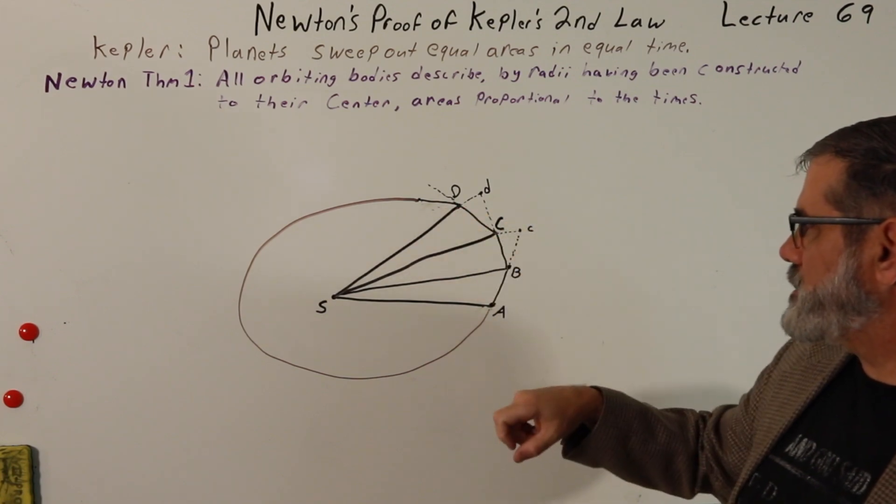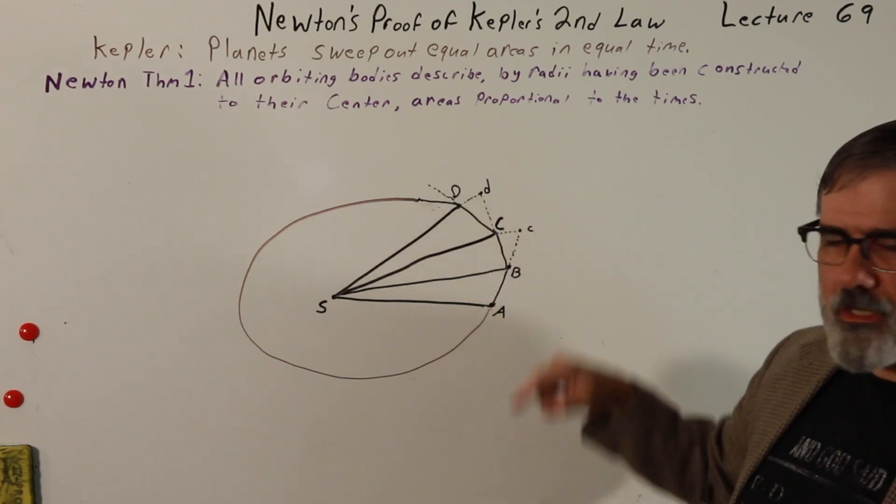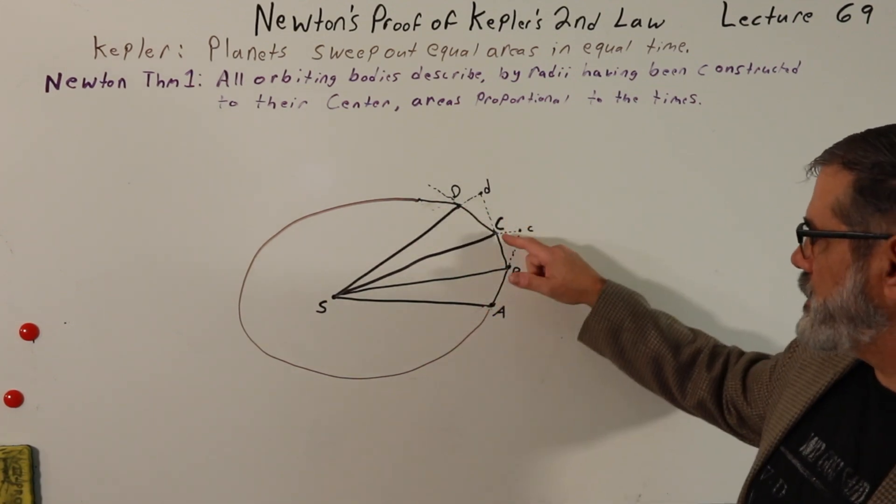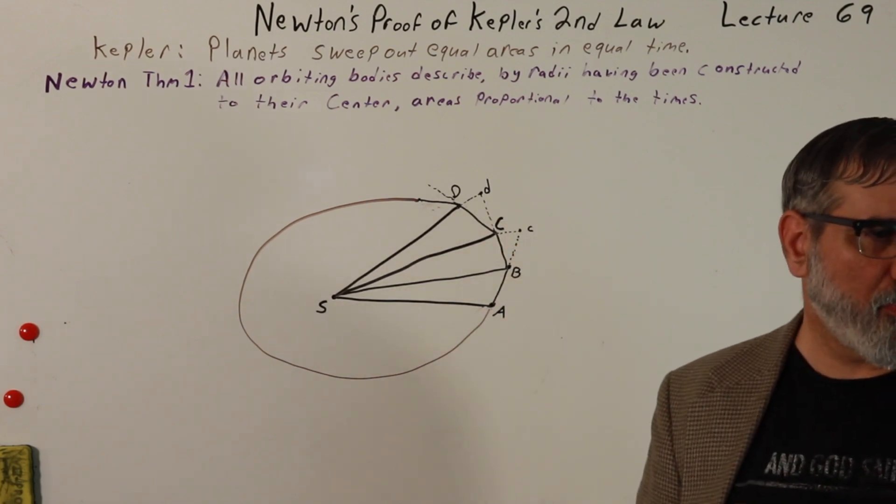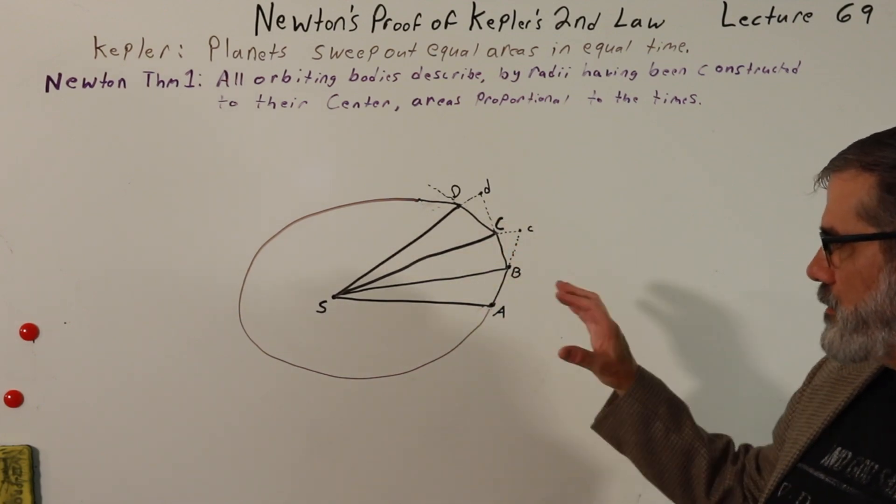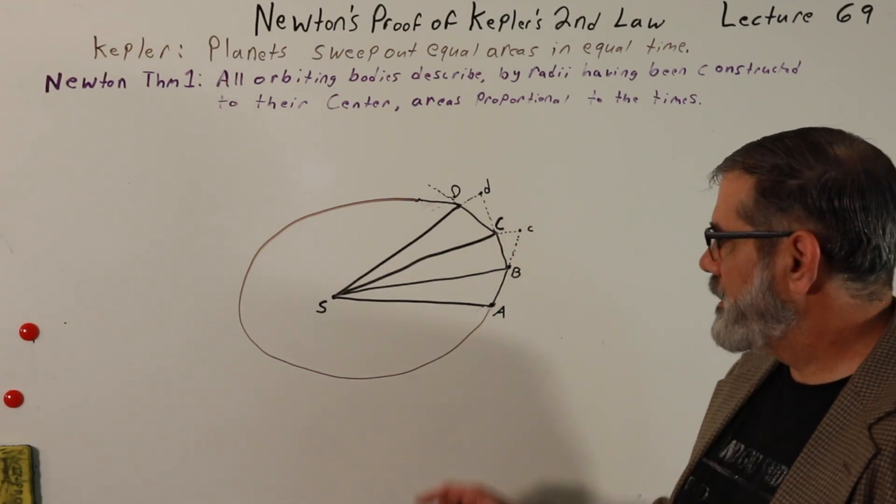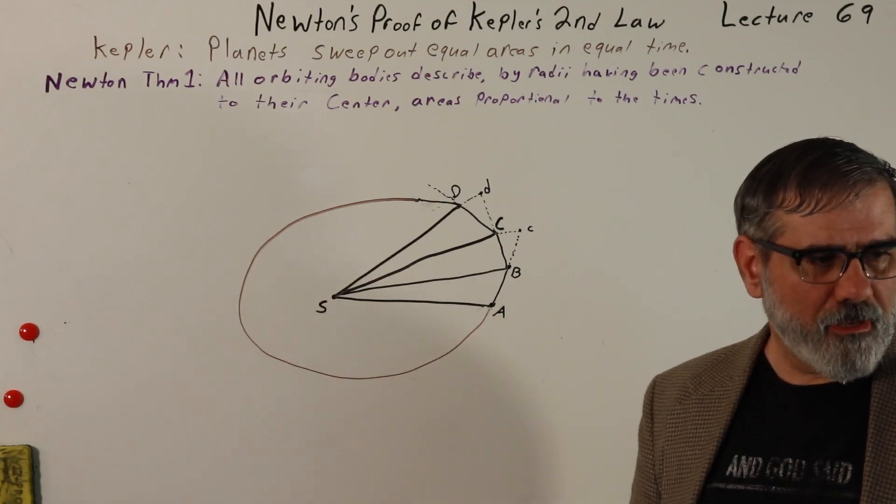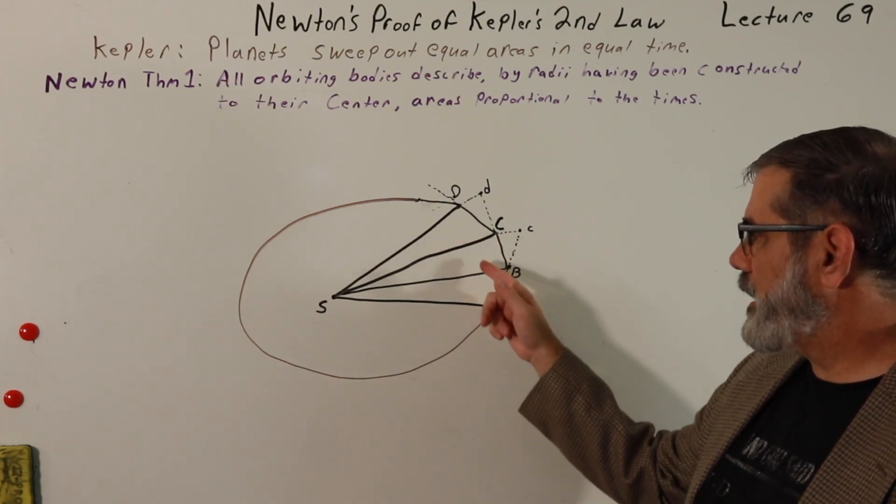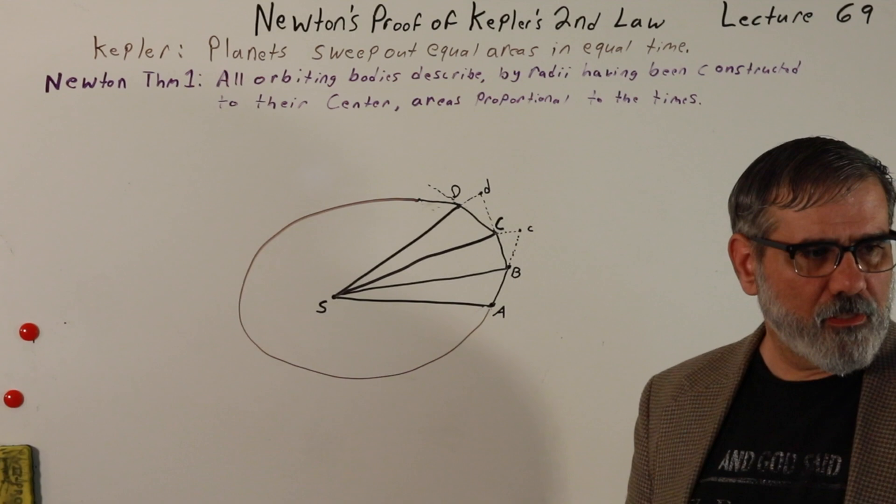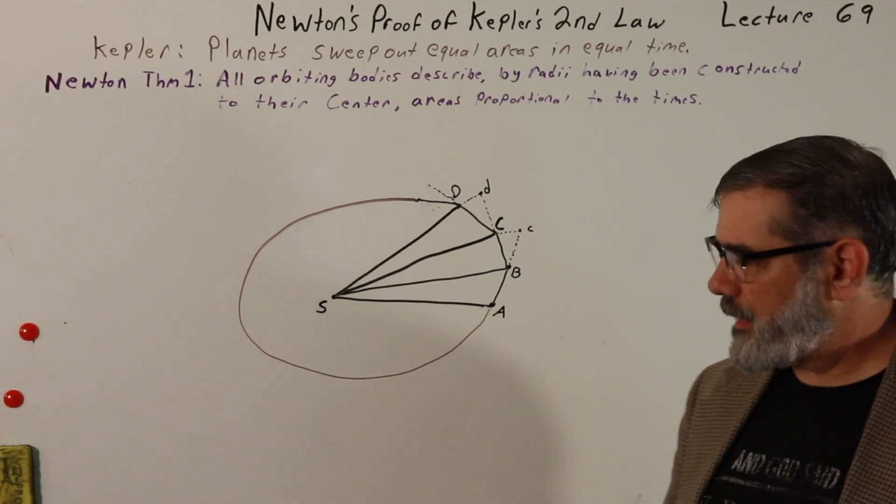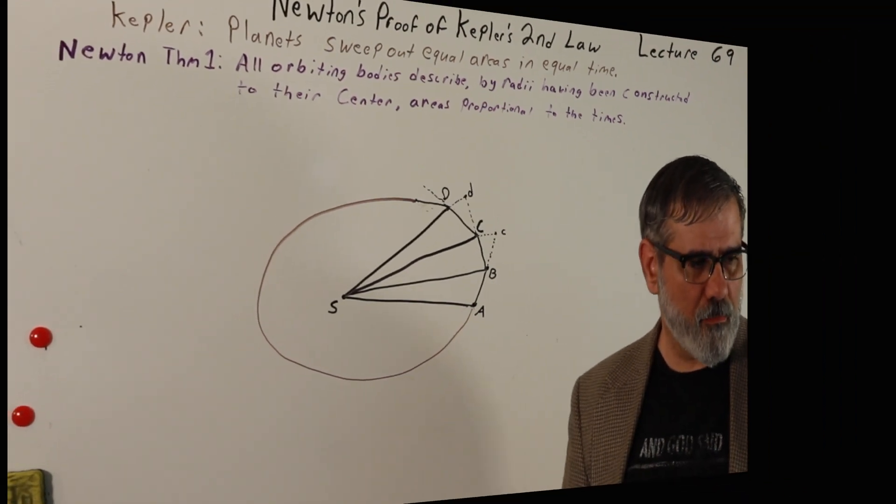The point, lowercase d, is where it would have wound up had it just continued on in a straight line with no impulse. So this is what Newton is trying to do. He's trying to approximate the curved elliptical path of an orbit by an infinite number of little triangles that are infinitely small. That's the general idea. We call it the polygonal approximation.